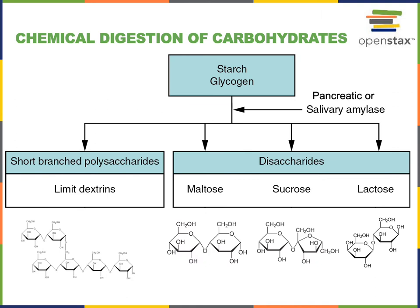The chemical digestion of carbohydrates begins in the oral cavity where the enzyme salivary amylase, which is produced by the salivary glands and secreted with saliva, mixes with a bolus of food. Salivary amylase catalyzes hydrolysis of polysaccharides like starch and glycogen, producing the disaccharide maltose and short branched polysaccharides known as limit dextrins. While salivary amylase initiates this process in the oral cavity, following deglutition, the low pH of gastric juice causes denaturation of salivary amylase.